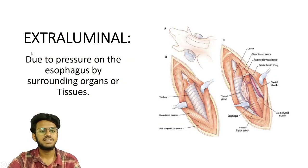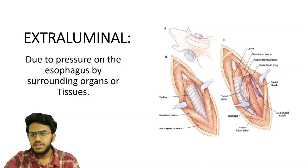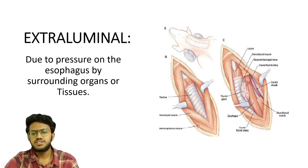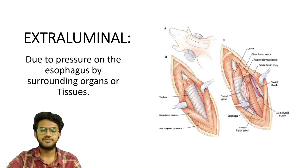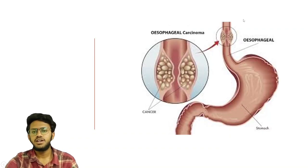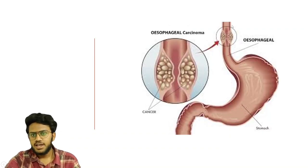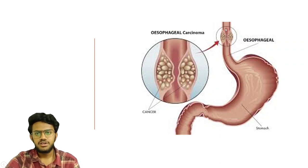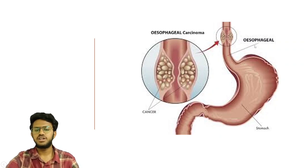The other factor is extraluminal, due to pressure on the esophagus by surrounding organs or tissues. You are looking at an image where the thyroid gland is putting pressure on both the trachea and the esophagus, causing problems with swallowing and breathing. Another image shows cancer in the esophagus narrowing the esophageal tube, causing difficulty in swallowing.